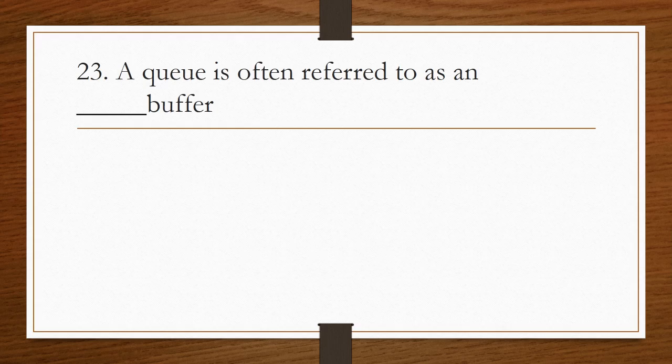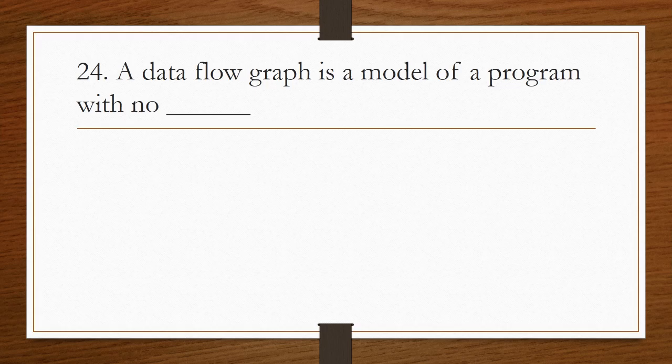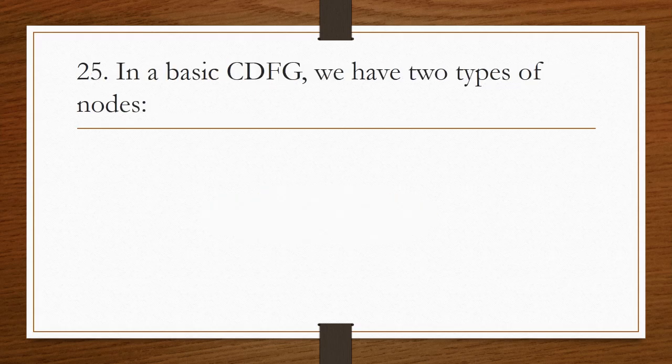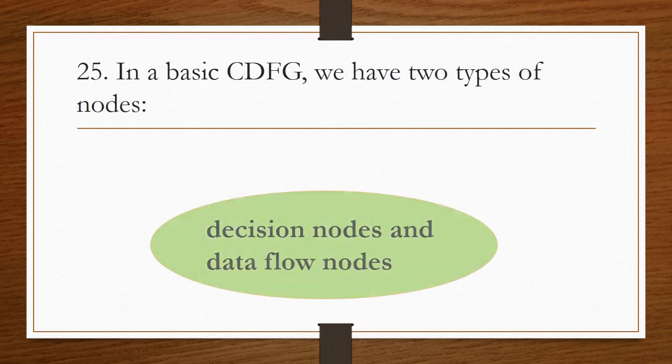A queue is often referred to as an elastic buffer. A data flow graph is a model of a program with no conditionals — there must be no conditions. In a basic CDFG, that is control data flow graph, we have two types of nodes: decision nodes and data flow nodes.